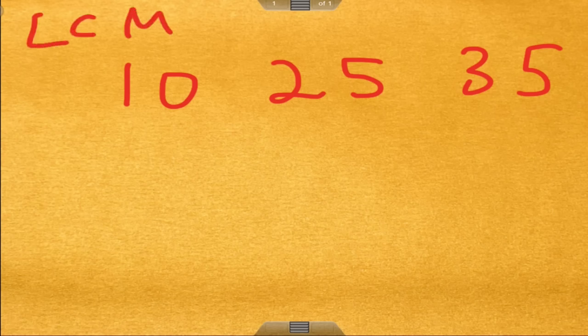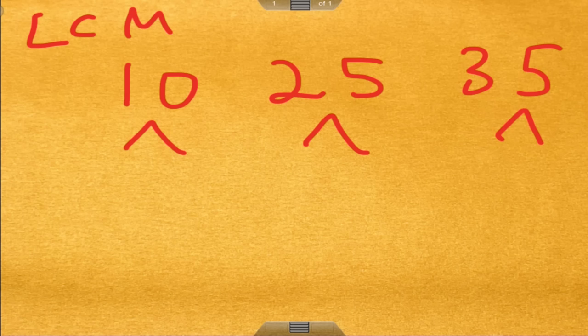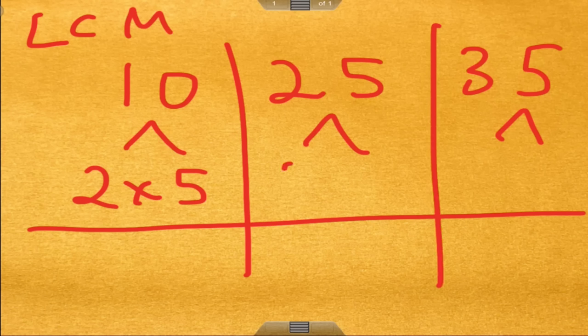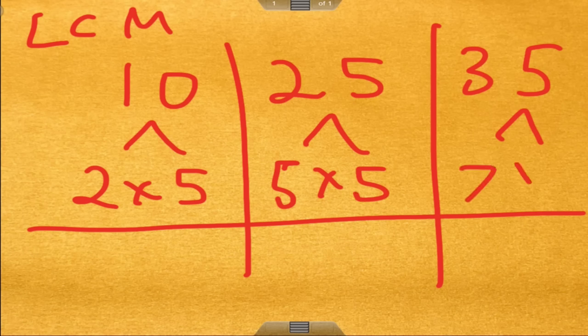So what we're going to do is do a prime factorization of each. So if I do that, I know 10 is 2 times 5. I know 25 is 5 times 5, which is 5 squared, and 35 is 7 times 5.